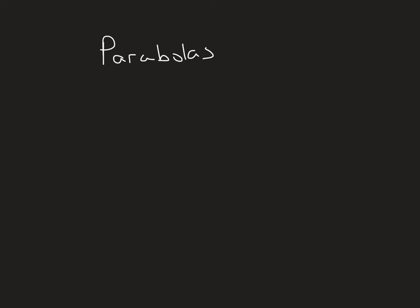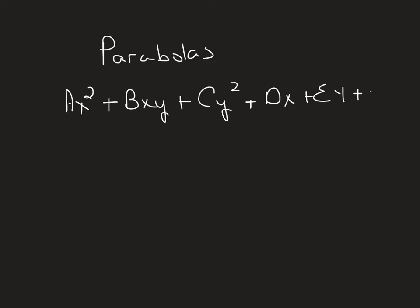We're beginning the conic sections today looking at parabolas. In general, the conic sections algebraically can be in the form AX squared plus BXY plus CY squared plus DX plus EY plus F. So that's a general equation for the conic sections.